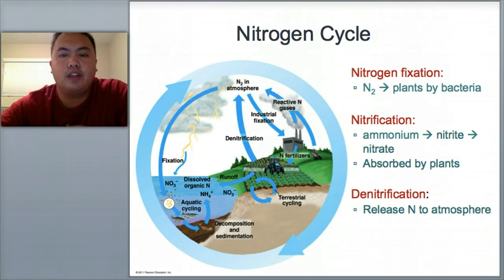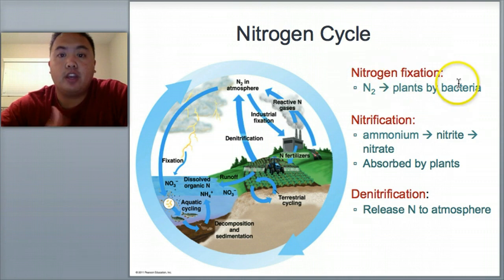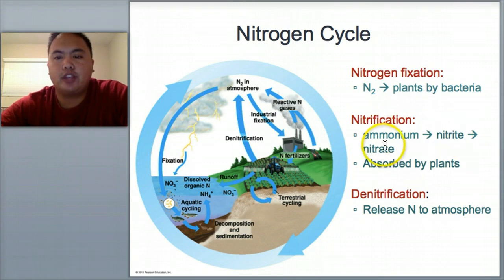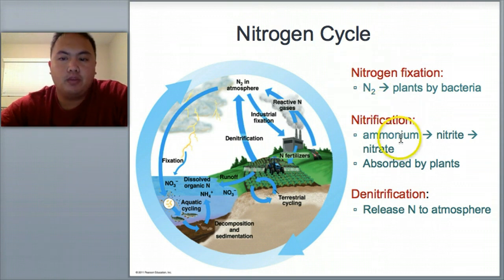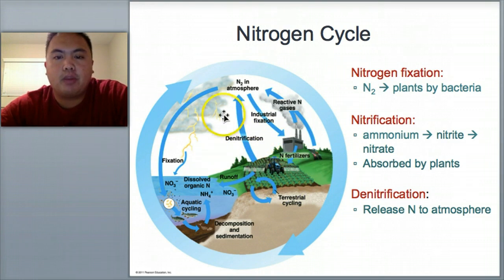The nitrogen cycle is more complex than the water and carbon cycles. The most common gas in our atmosphere is actually nitrogen, not oxygen. However, nitrogen cannot be used by plants as-is. You need nitrogen fixation, in which bacteria on plants take nitrogen from the air and fix it into a form plants can use. Then there's nitrification, where that fixed nitrogen turns into ammonium, then nitrite, then nitrate, which plants can absorb. Finally, denitrification releases nitrogen back into the atmosphere, starting the cycle over — this can be done by bacteria.